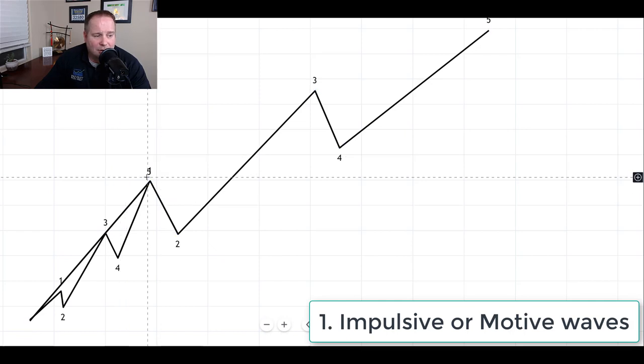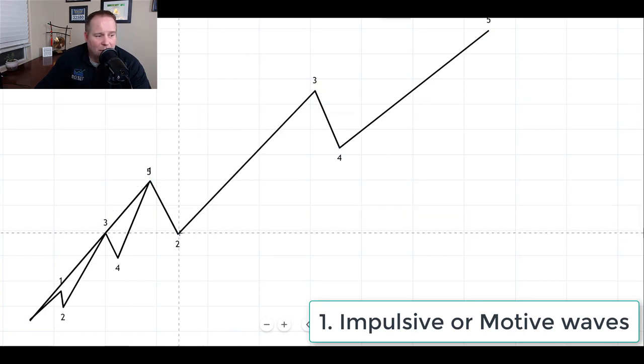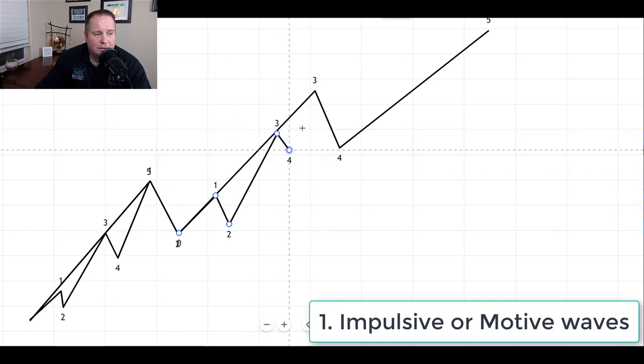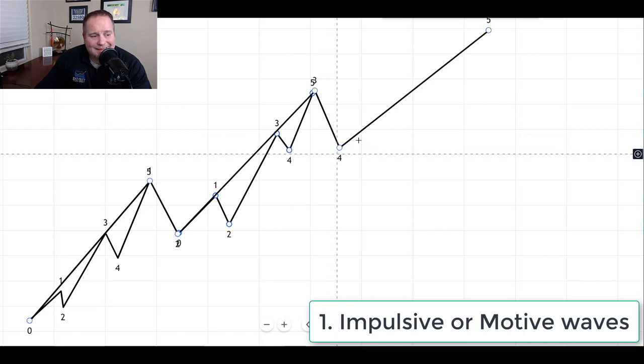And then you would get a corrective wave, which we'll talk about in just a minute, down. And then this wave three would be made up of five waves. And it would have a wave one, two, three, four, five up. And then you would have a corrective wave, and then, again, wave five would also be made up of five waves.